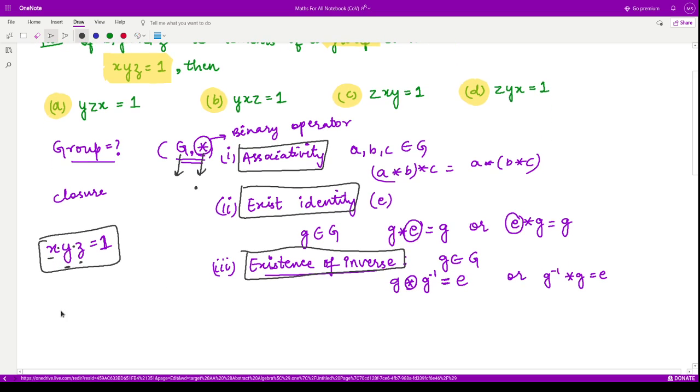Let us see which of the options is correct. Here you see we have x dot y dot z, so we can apply the brackets over here like this, and it is equal to one.